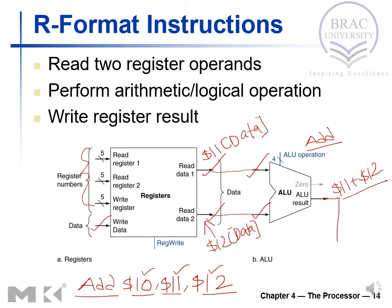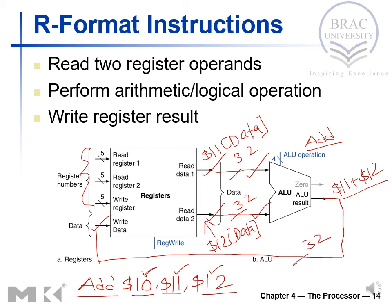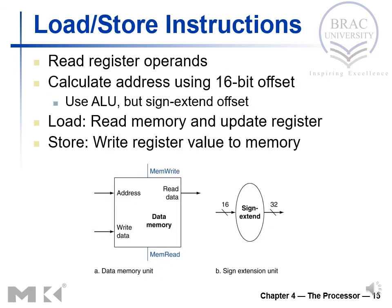The ALU result — the sum of R11 and R12 — needs to be transferred to the destination register R10. This is the write-back operation. The data lines carrying register data are 32 bits wide. The register select lines are 5 bits each, because 2 to the power 5 equals 32, and we have 32 registers (0 to 31) inside the register file. This is how an R-type instruction executes.